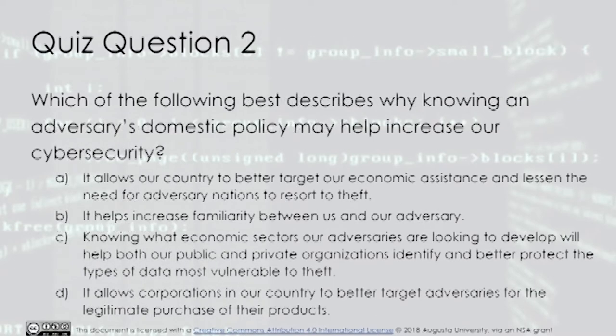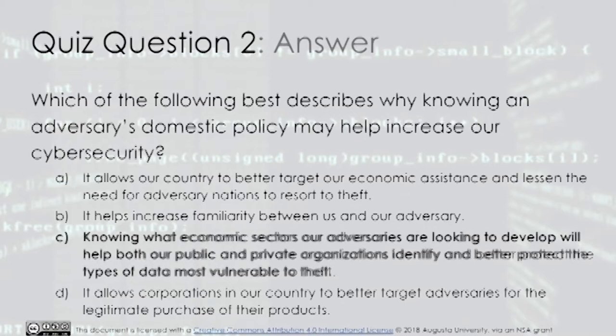Quiz Question 2: Which of the following best describes why knowing an adversary's domestic policy may help increase our cybersecurity? A. It allows our country to better target economic assistance and lessen the need for adversary nations to resort to theft. B. It helps increase familiarity between us and our adversary. C. Knowing what economic sectors our adversaries are looking to develop will help both our public and private organizations identify and better protect the types of data most vulnerable to theft. D. It allows corporations to better target adversaries for legitimate purchase of their products. The answer is C.